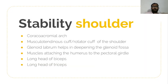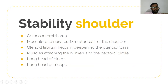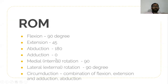The stability of the shoulder joint is provided by the coraco-acromial arch, the rotator cuff muscles, the glenoid labrum — which deepens the glenoid fossa for better attachment — muscles attaching the humerus to the pectoral girdle, and the long head of biceps and long head of triceps. Whenever rehabilitating the shoulder joint, we should give rehab to all these structures.